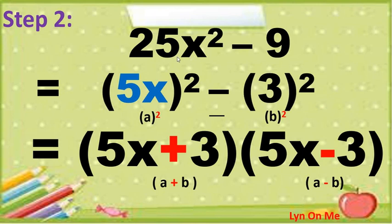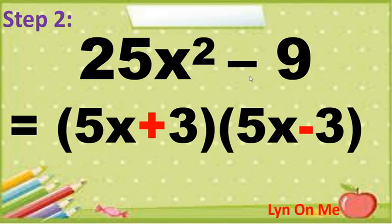Proceed to the second step: write it as a product of the sum and difference of two terms. Since a squared minus b squared equals (a plus b)(a minus b), and a equals 5x and b equals 3, then a plus b equals 5x plus 3 and a minus b equals 5x minus 3. Therefore, 25x squared minus 9 equals (5x plus 3)(5x minus 3).